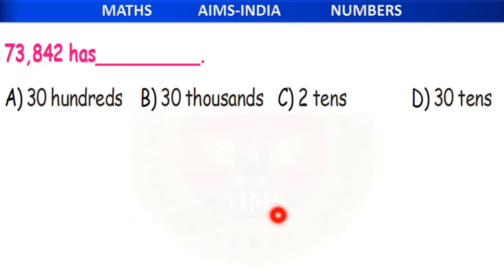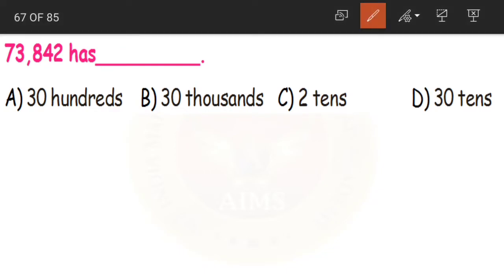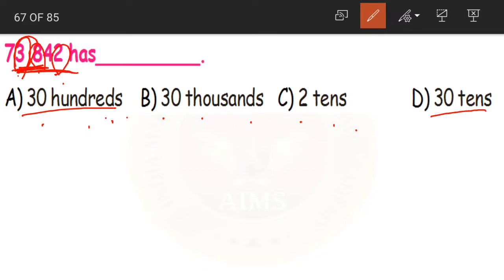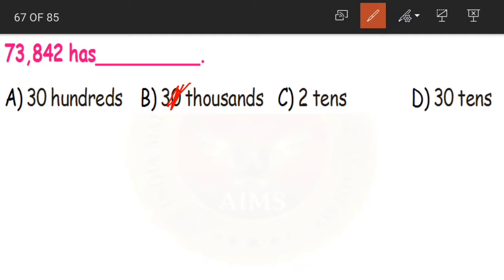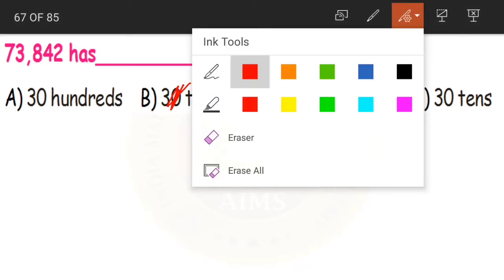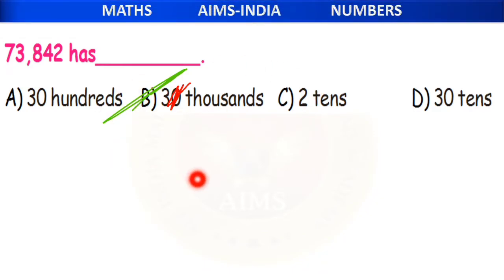Next: 73,842 has dash. Option A says 30 hundredths — no, it has 8 hundredths. Option B says 30 thousandths — no, it has 3 thousandths. Option C says 2 tens — no, it has 2 ones. Option D says 30 tens — no, it has 3 thousands. There appears to be an issue with the options as given. If option B is taken as '3 thousands,' then option B is the correct answer. 73,842 has 3 thousands.